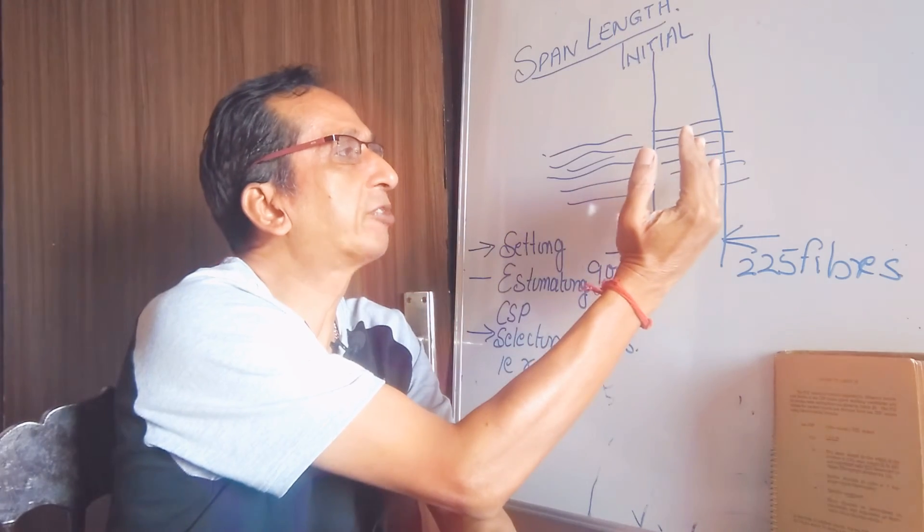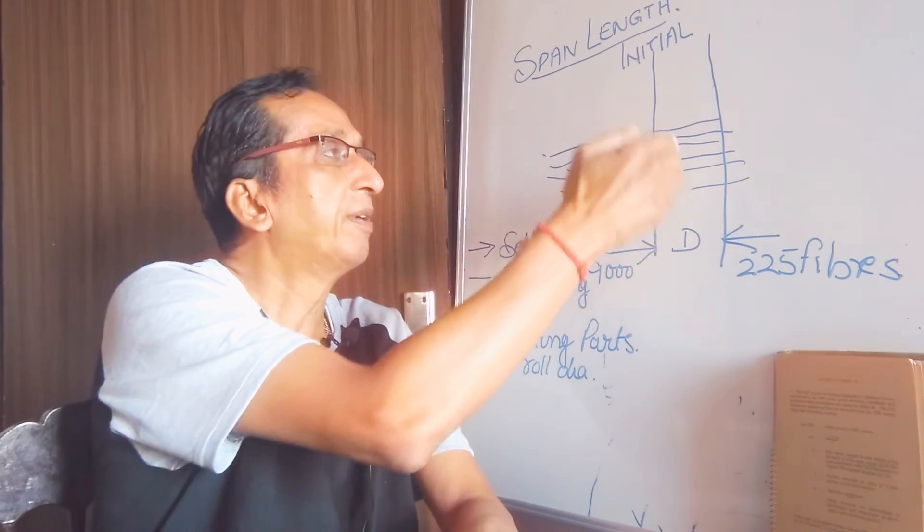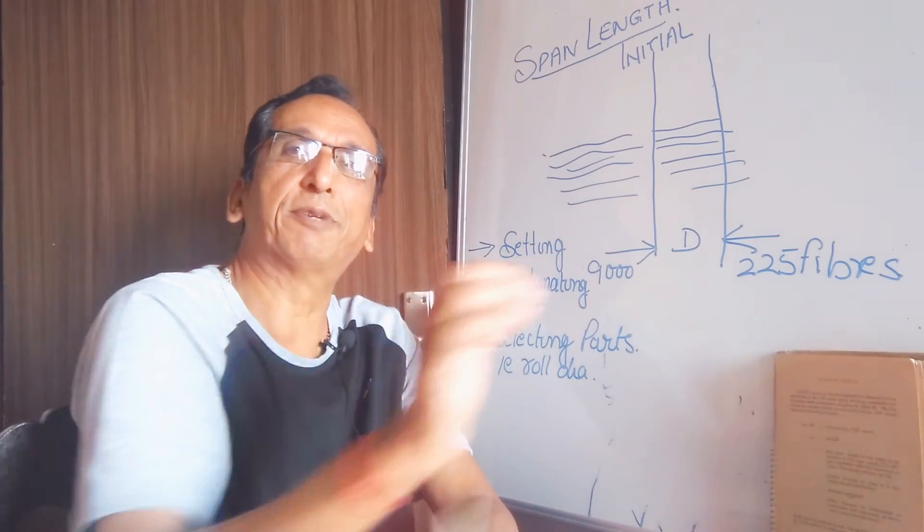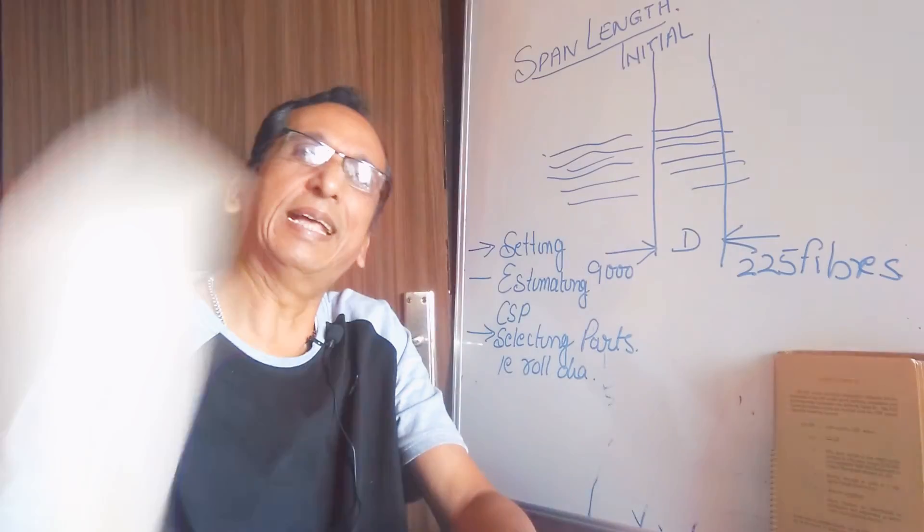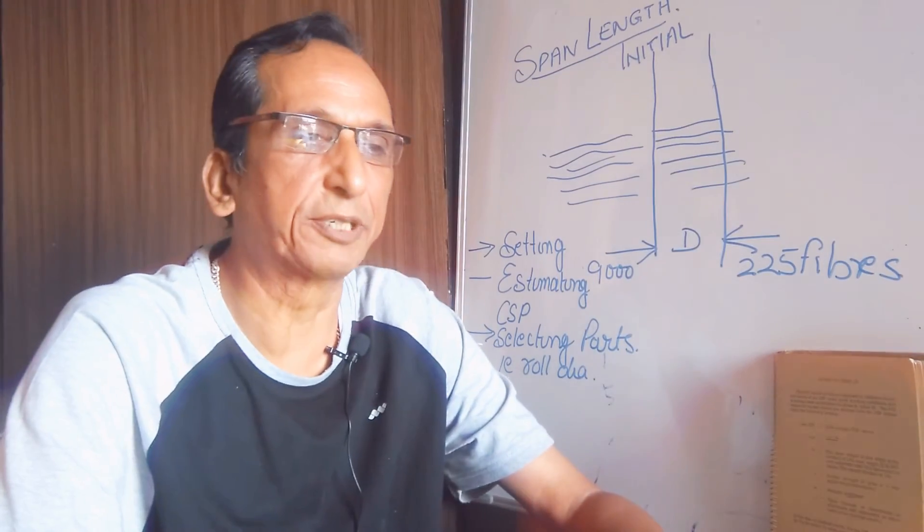If I move this line towards the initial line, then where the line where the 4500 fibers are present, that length is called the 50% span length.